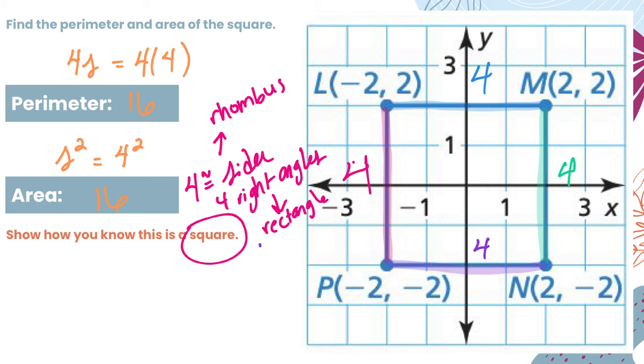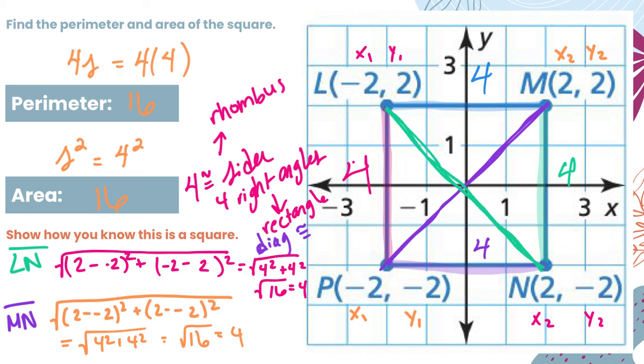But I also know that a rectangle has diagonals that are congruent. So if I can prove that this diagonal is congruent to this diagonal, then I can prove that I have a square. What I will do is find the distance of LN and the distance of MN using the distance formula. For time's sake, I've worked that out off-camera, but we see that those two diagonals are congruent, and that is how I know this shape must be a square.